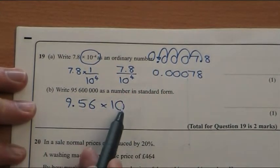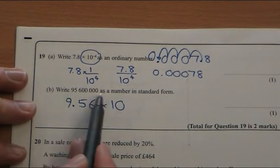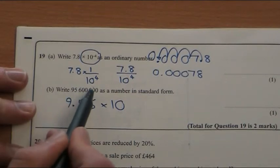And I have to times this by 10 to get from here to my original number. So I'm timesing it by 10 once, two, three, four, five, six, seven.